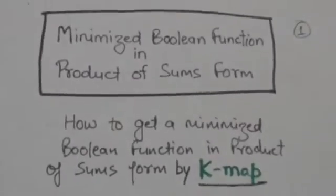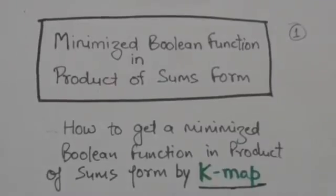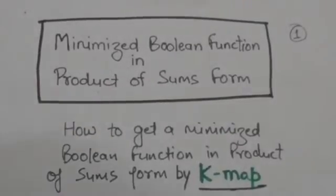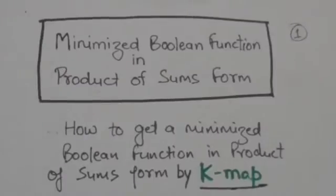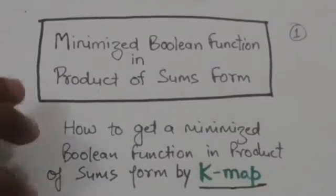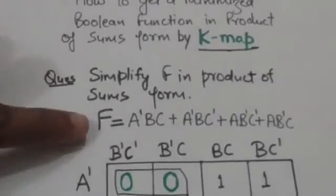Hello friends, welcome back. In this tutorial we will study how we can minimize a Boolean function in Product of Sums form. When a function is expressed as the sum of minterms, those minterms which are not included in that function — their sum forms the complement of the function. Suppose we have to minimize this function f in Product of Sums form by using a K-map.